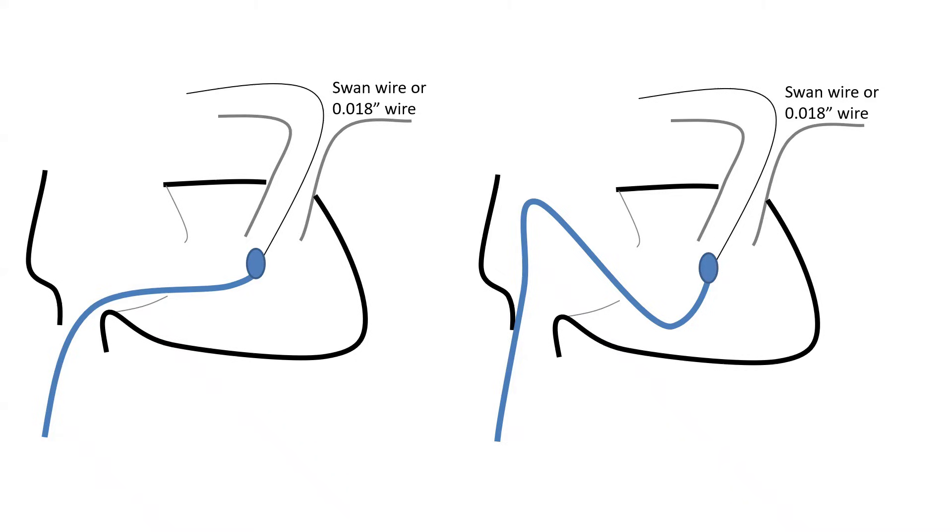So the wire is very handy in those cases, not just to get into the PA, but to get deep into the PA, into a distal PA branch to be able to wedge the catheter.